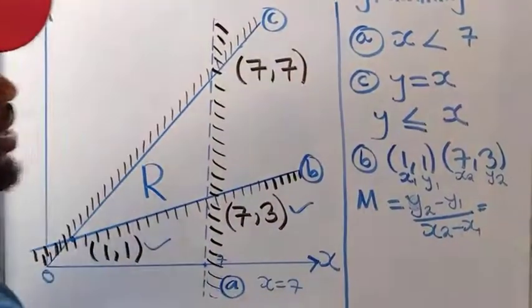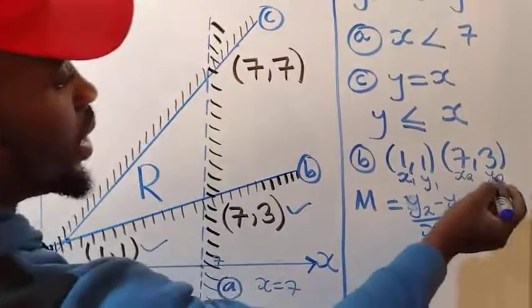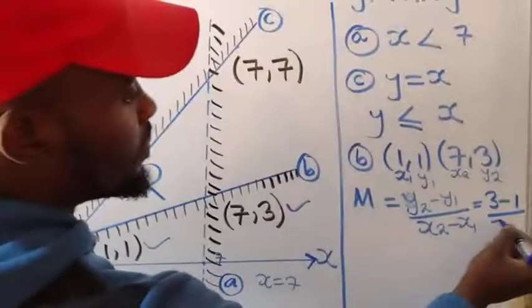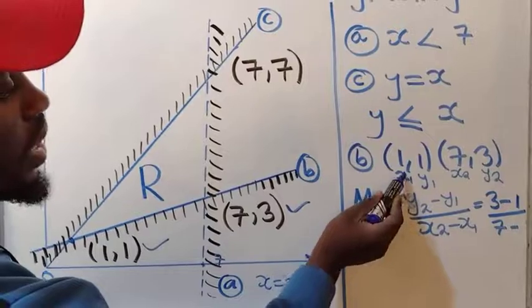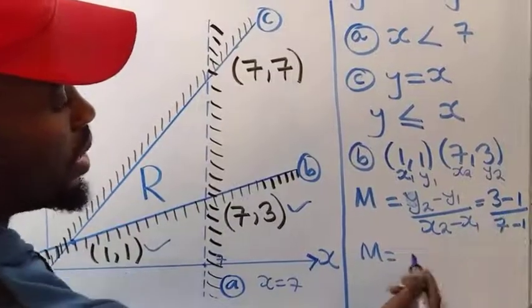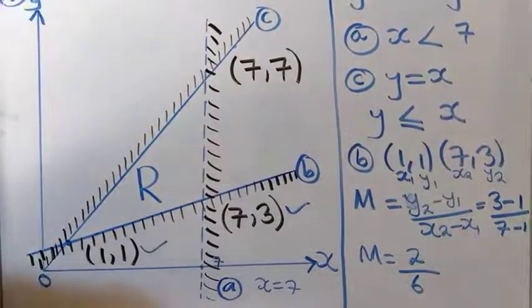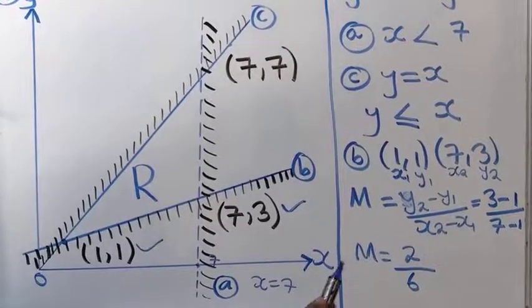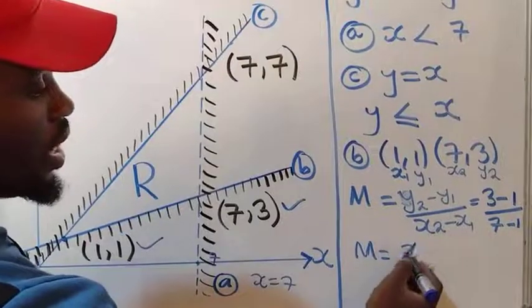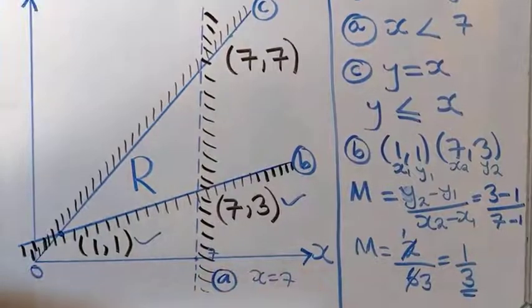Let's compute: y2 is 3, y1 is 1, x2 is 7, x1 is 1. So gradient equals 3 minus 1 over 7 minus 1, which gives 2 over 6. Find the highest common factor of 2 and 6, which is 2. So 2 divided by 2 is 1, and 6 divided by 2 is 3. Therefore the gradient is 1 over 3.